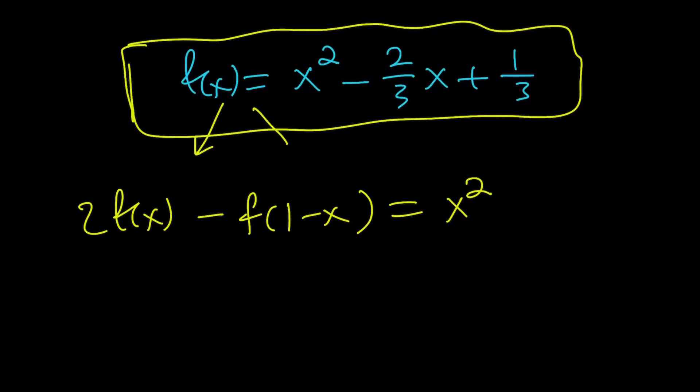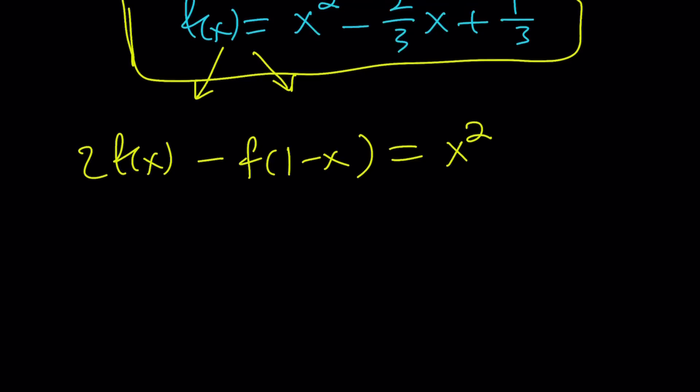So let's substitute f(x) here, and of course here too, and see if we can get x² from there. I'm going to work on the left-hand side and see if I get x² at the end. So 2 times f(x), that's going to be 2 times (x² - 2/3 x + 1/3). That's my f(x) minus f(1-x).